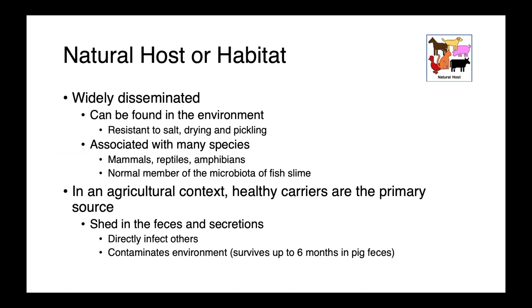In an agricultural context, healthy carrier animals are the primary source of infections, where the bacteria is shed in the feces and other secretions. Transmission can occur through direct contact or also through environmental contamination. Erysipelothrix rhusiopathiae has been shown to survive for up to six months in pig feces, so environmental persistence is certainly a possibility.